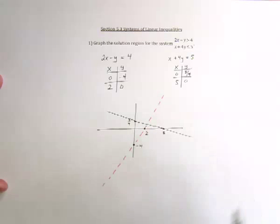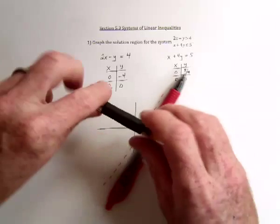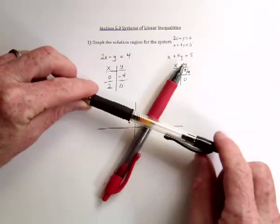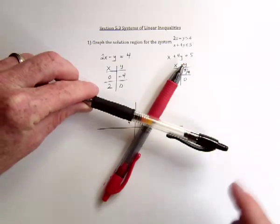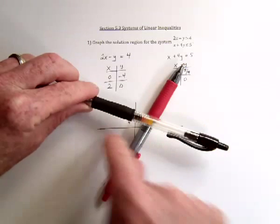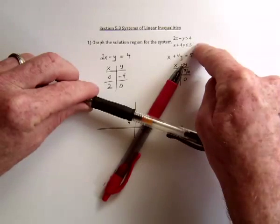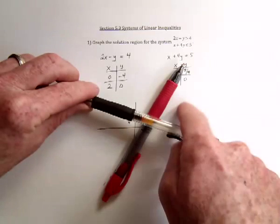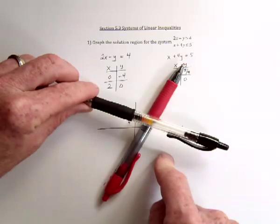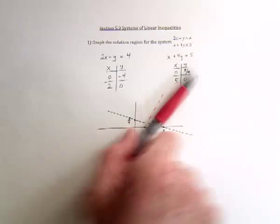And by having these two lines, we've basically cut the plane into four pieces. And now what we've got to see is which of the four makes the original inequalities true. So it's only going to be one of the four regions, and then we'll shade that region.